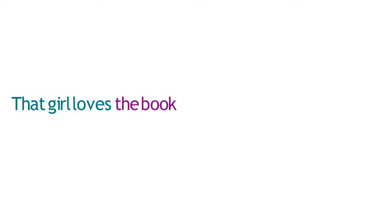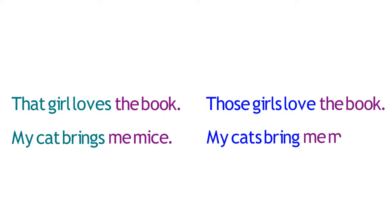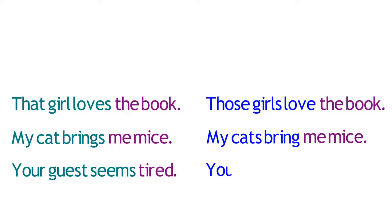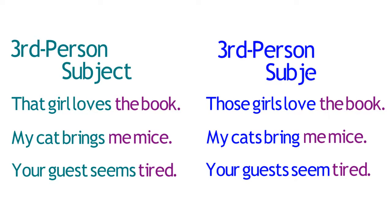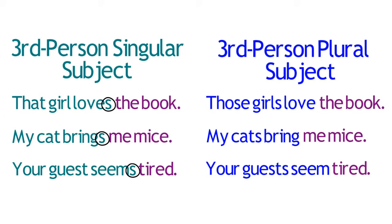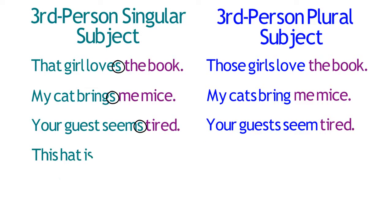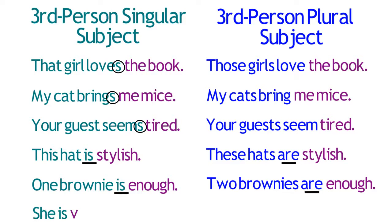Subject-Verb Agreement is most often an issue when the subject of a sentence is either a noun or a noun phrase. Remember that nouns and noun phrases are always considered third-person subjects. Notice that in all three of these examples, the change from a singular to a plural subject requires the omission of the letter S at the end of the verb. One of the most common Subject-Verb Agreement issues is the change from "is" to "are" when a third-person subject shifts from singular to plural.